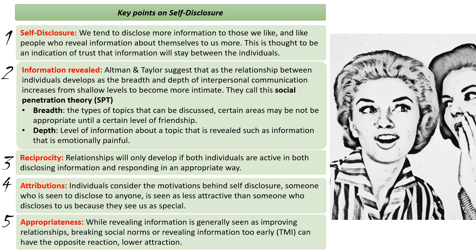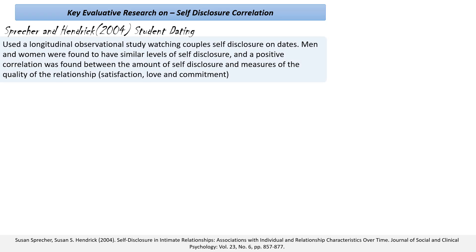A piece of correlational research on self-disclosure: researchers Sprecher and Hendrick looked at student dating behaviour. They used a longitudinal observational study design, watched couples on dates, and observed their self-disclosure patterns. They looked at how much self-disclosure there was and whether there was a correlation between the amount of self-disclosure and the reported relationship satisfaction of these individuals. They found that men and women self-disclose at about a similar level, and also found a positive correlation between the amount of self-disclosure and measures of relationship quality.